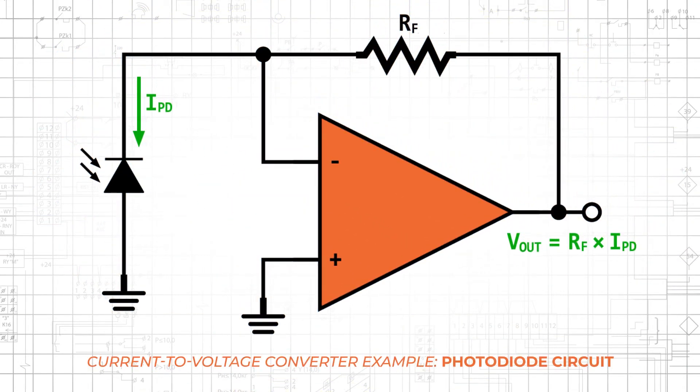Perhaps the most common application of the current-to-voltage converter, also known as a transimpedance amplifier, is photodiode circuits such as the one shown here. The photodiode generates a current that is proportional to light intensity, and consequently the overall circuit generates a voltage signal that is proportional to light intensity.